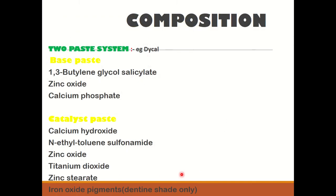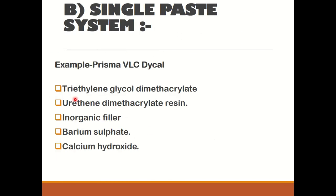Regarding composition: in the two paste system, we have a base paste and a catalyst. Under the base paste, we have butylene glycol salicylate as the main agent. In the catalyst paste, we have calcium hydroxide, which reacts with the salicylates to yield amorphous calcium disalicylate. Apart from that, we have zinc oxide, titanium dioxide, and iron oxide pigments. In the single paste system, we have triethylene glycol dimethacrylate, urethane dimethacrylate resin, inorganic barium sulfate filler, and calcium hydroxide.